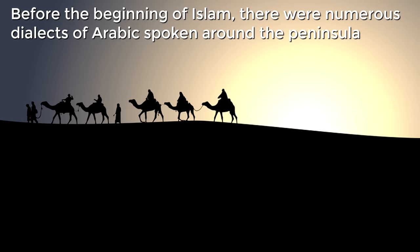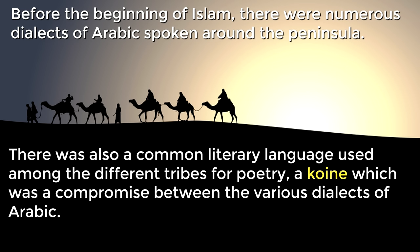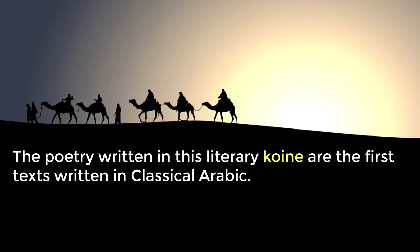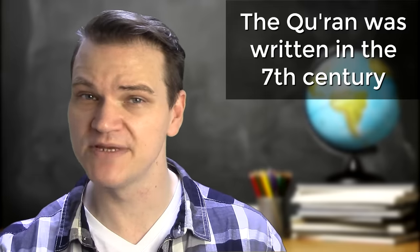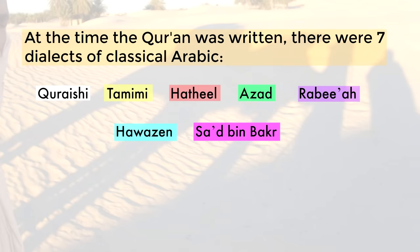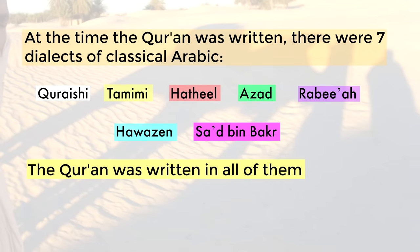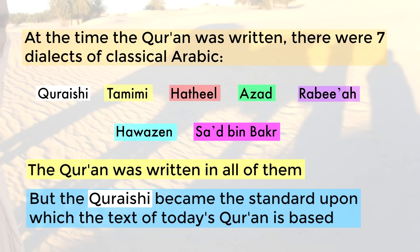Before the beginning of Islam, numerous dialects of Arabic were spoken around the peninsula, but there was also a common literary language used among different tribes for poetry — a koine, a compromise between the various dialects. The pieces of poetry written in this literary koine are the earliest examples of Classical Arabic. The Quran was written in the 7th century; Muslims believed it was revealed to Muhammad by the Angel Gabriel over a 23-year period. At the time, there were 7 dialects of Classical Arabic. The Quran was written in all of them, but the Qurayshi version became the standard. The differences were in pronunciation, not vocabulary or grammar.